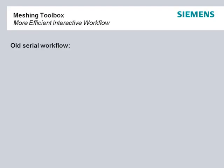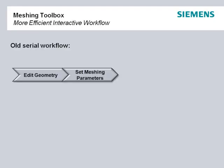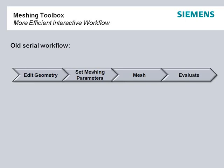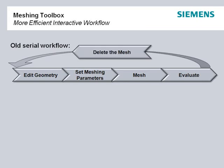One of the major benefits of Femap's Meshing Toolbox comes from the ability to make changes to the geometry and the mesh interactively. The meshing process adopted by many modelers is usually serial in nature. That is, the various tasks such as editing geometry, setting mesh parameters, meshing and evaluating the resulting FE model are performed one after the other. If any further changes are required then the meshed model is deleted and the process has to start over again.